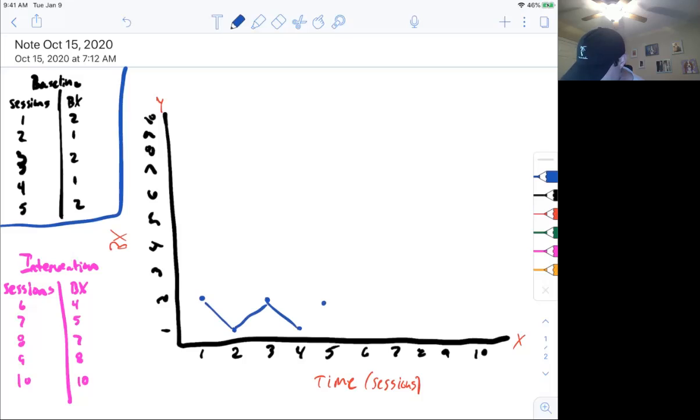Connect your dots. There you go. Graphing, right? Change to intervention. Now we look at our intervention data. Same thing. Six was four. Seven was five. Session eight was seven. Nine was eight. Ten was ten. And again, connect the dots.